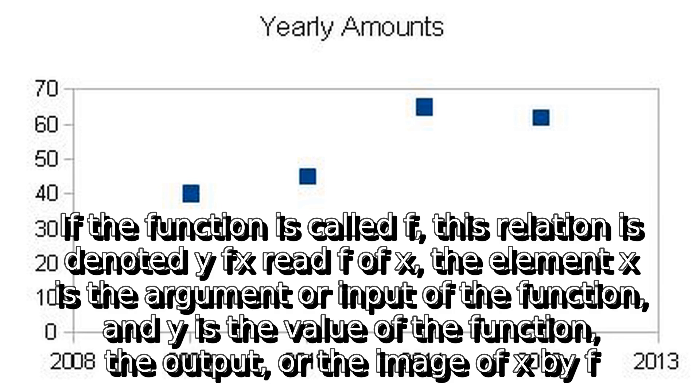If the function is called f, this relation is denoted y = f(x) (read f of x). The element x is the argument or input of the function, and y is the value of the function, the output, or the image of x by f.